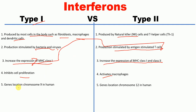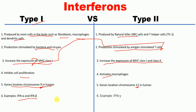The location of type 1 interferon genes is chromosome 9 in humans, whereas the location of type 2 interferon genes is chromosome 12 in humans. Examples of type 1 interferons are interferon alpha and interferon beta. An example of type 2 interferon is interferon gamma.